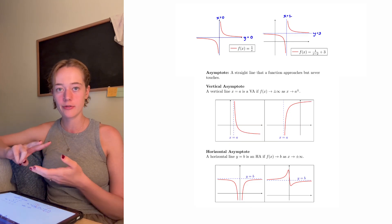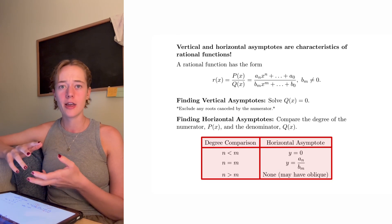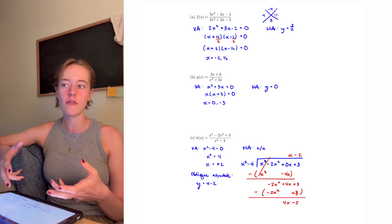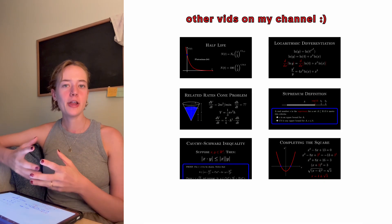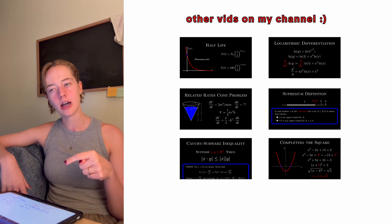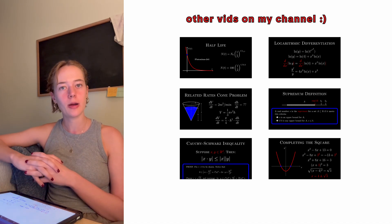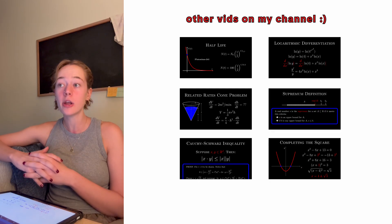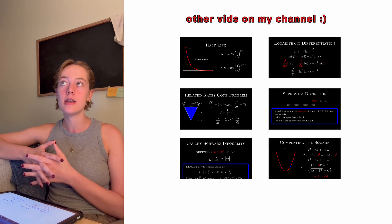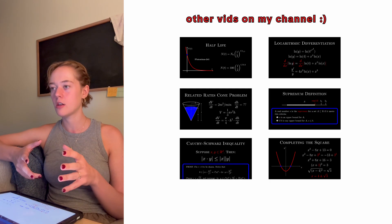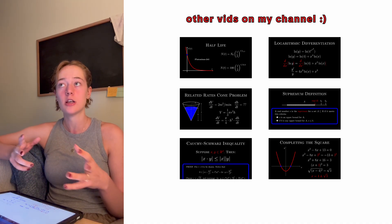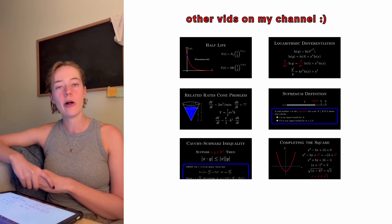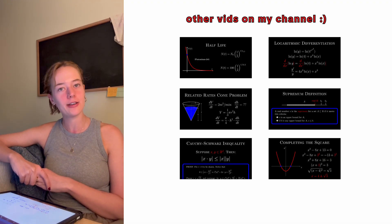I hope this video has been helpful. We went through the definitions of asymptotes — both horizontal and vertical — how you find them for a rational function, and examples covering pretty much everything that could be thrown at you. If you like this video, consider dropping a like below, maybe subscribe if you're not subscribed already, and thanks for watching. Comment down below what kind of videos you'd like to see — we could do more on rational functions, like finding x-intercepts and y-intercepts.